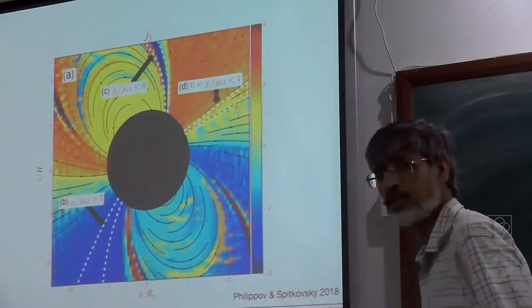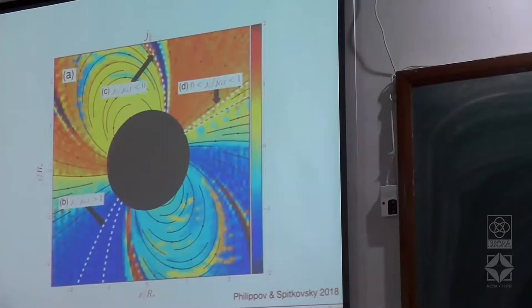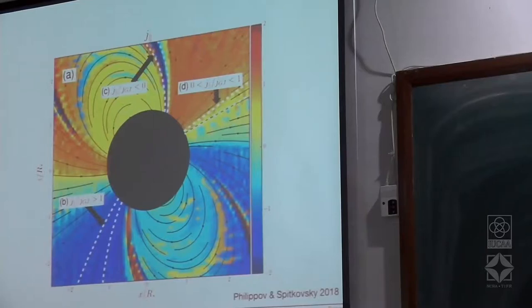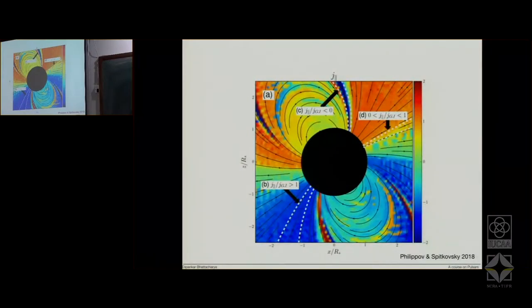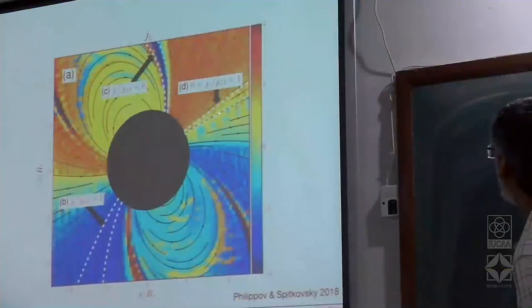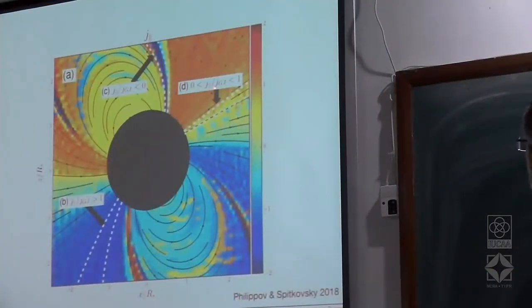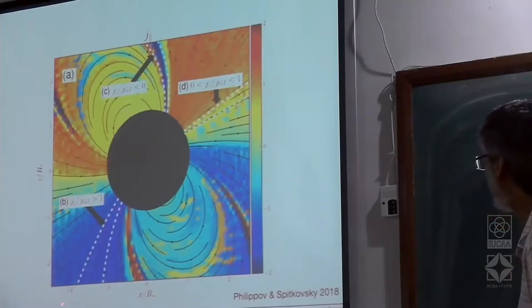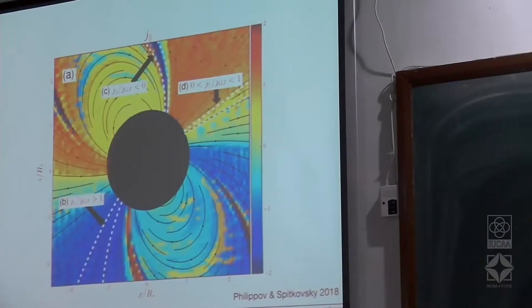In the region hugging the last closed field line, J_parallel divided by J_GJ is less than zero — a return current condition giving uncompensated electric field. The Goldreich-Julian current is supposed to be in one direction; this actual current is in the opposite direction — it is a return current. There are also regions where J_parallel/J_GJ is less than 1, which is fine, and you can short out the electric field and sustain that current. And there is the region between the white lines where J_parallel/J_GJ is greater than zero once you include GR — again a region where the electric field cannot be fully compensated and acceleration occurs.